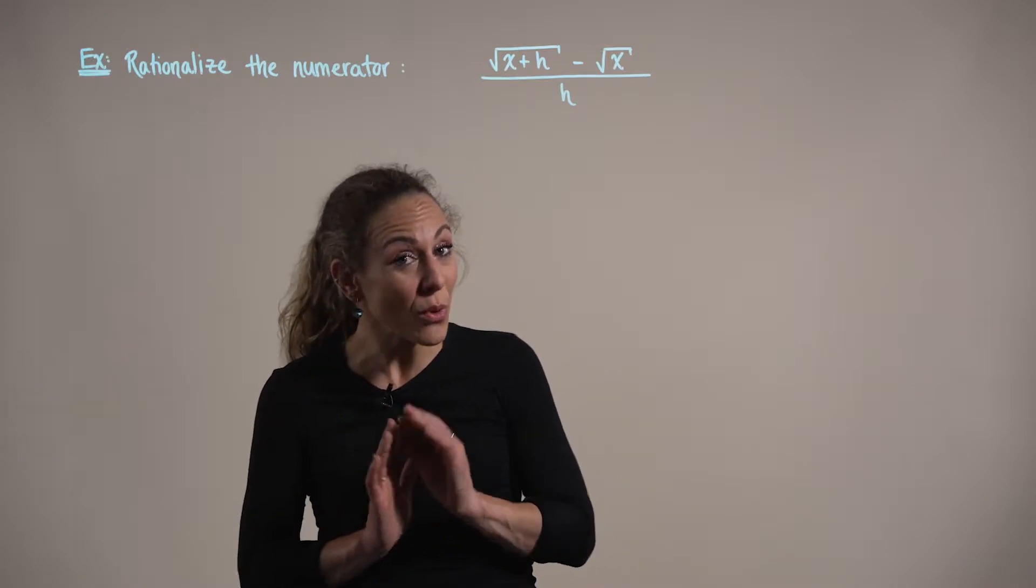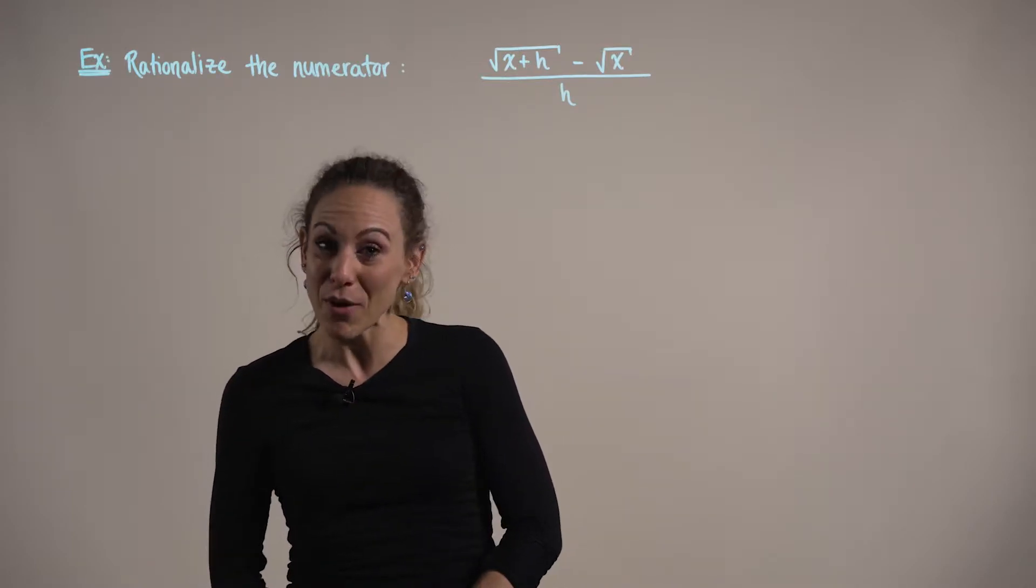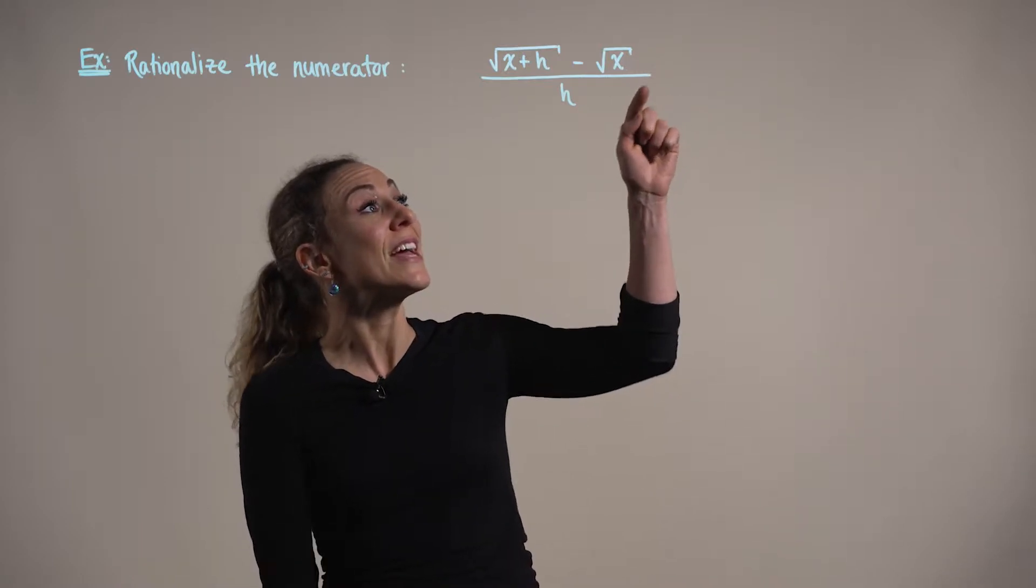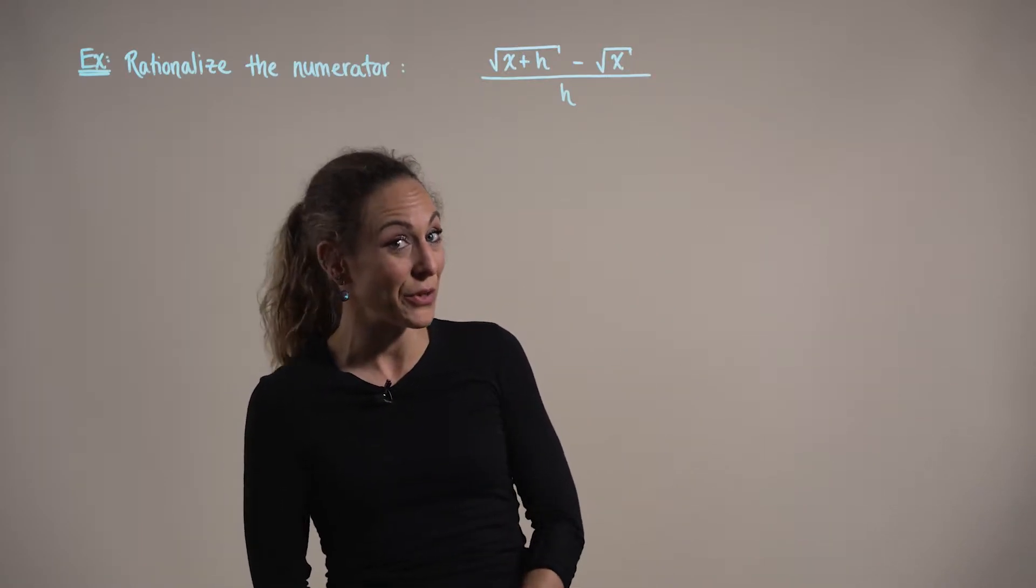In order to rationalize this numerator, we're going to need to multiply both the numerator and denominator by the conjugate of the numerator.